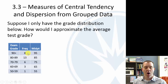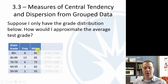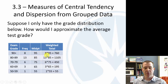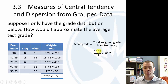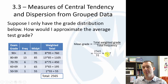What we're going to do is pretend all eight A students scored 95, and all 13 B students scored 85, and so on. We multiply each midpoint by its frequency to get weighted values, add them all up to get 256, then divide by the total frequency of 31 students to get an average grade of about 82.7.